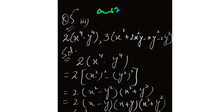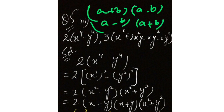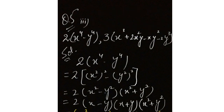a minus b, a plus b — yaad hai na? Aap a plus b a minus b likh sakte hain: pehla minus mein likhte hain, agla plus mein. Toh pehla hai x², doosra hai y². Same here: x² and y². Toh hamare paas yeh ban gaya: (x² minus y²)(x² plus y²). Ab yahan par a² minus b² ke factors phir banenge: (x minus y)(x plus y) — isse zyada iske factors nahin ban sakte.